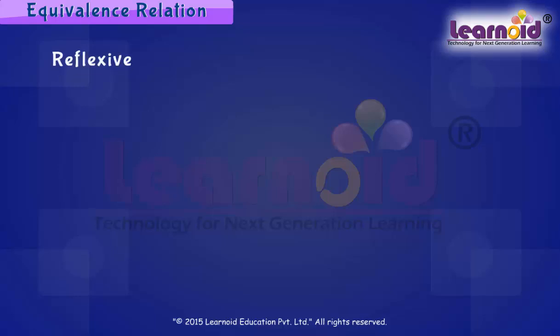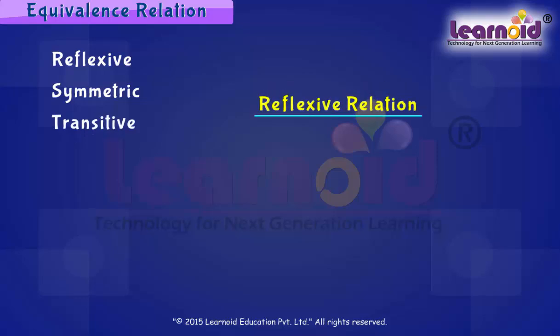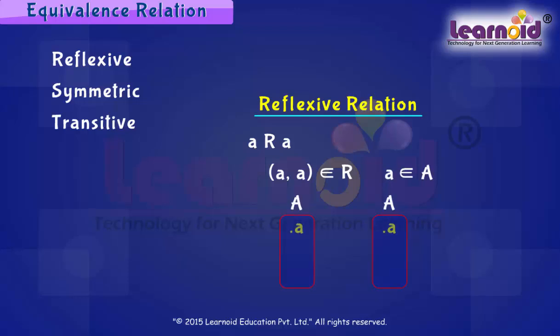A relation R in a set A is called reflexive if the ordered pair (A, A) belongs to R for every element A belonging to set A. This means the relation is true on the element itself.